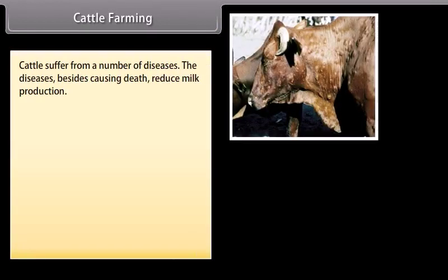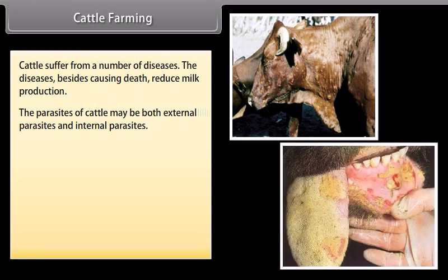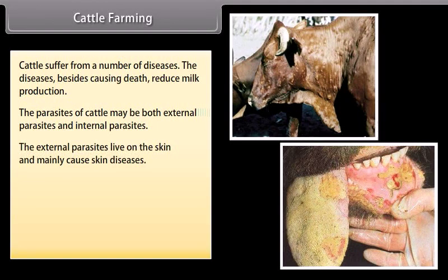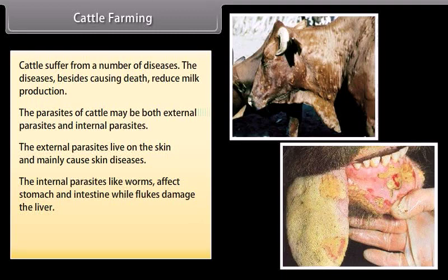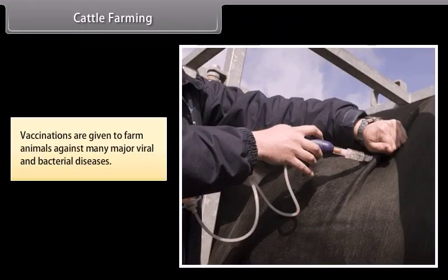Cattle suffer from a number of diseases. These diseases, besides causing death, reduce milk production. The parasites of cattle may be both external and internal. External parasites live on the skin and mainly cause skin diseases. Internal parasites like worms affect the stomach and intestine, while flukes damage the liver. Infectious diseases are also caused by bacteria and viruses. Vaccinations are given to farm animals against many major viral and bacterial diseases.